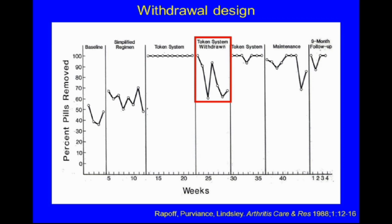We then introduced the originally planned intervention — a token system where he earned points for taking his medications, which he could trade in for special privileges. His adherence jumped up to 100% during the first token system phase. The red box shows the withdrawal of the token system, where the control element comes in — once it was withdrawn, adherence dropped. When reinstated, adherence increased again. During the maintenance phase, he had to stay above 80% adherence or the token system would be reinstated. That never happened, and at a nine-month follow-up he had very good adherence.